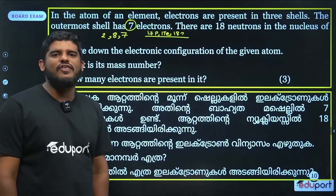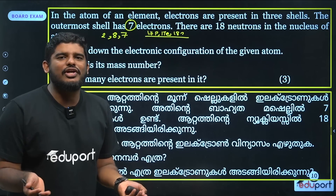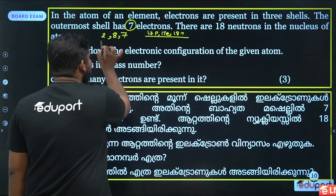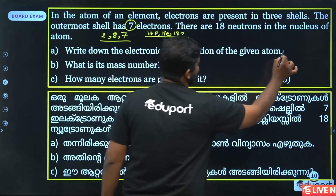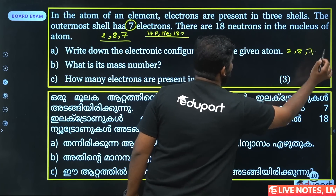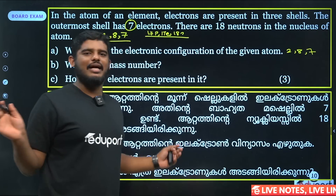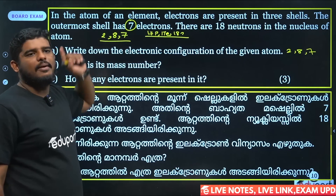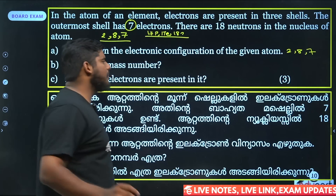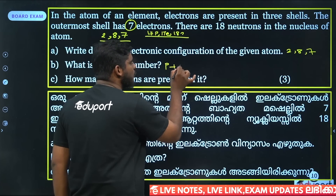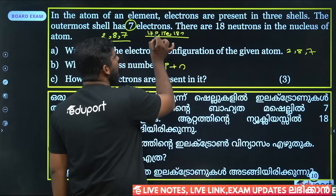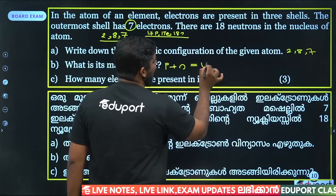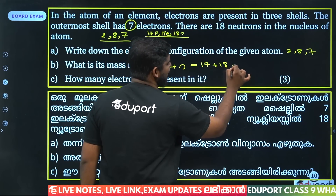Write down the electronic configuration. The configuration is 2, 8, 7. What is the mass number? Mass number = protons plus neutrons = 18 plus 18 = 36.